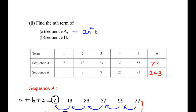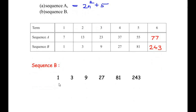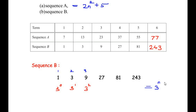Now for sequence B: we already established that 3⁰ = 1, 3¹ = 3, 3² = 9, and so on. The power of 3 is always one less than the term number — for term 1 the power is 0, for term 2 the power is 1, for term 3 the power is 2, and so on. Therefore the nth term is 3^(n−1).